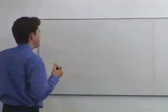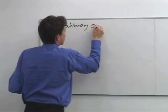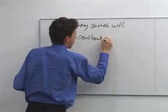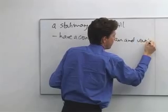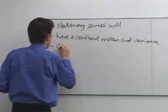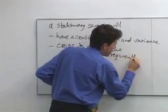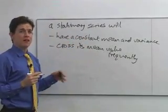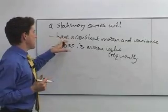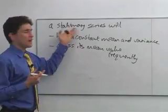We can think of a stationary series as one which has the following characteristics. First, a stationary series will have a constant mean and variance. Secondly, a corollary of that is that a stationary series will cross its mean value frequently. This is not an algebraic definition of stationarity, nor is it very precise, but it will do for now. So if we examine a series and it appears to have a constant mean and variance and it appears to cross its mean value frequently, then very loosely speaking, we can say that series is probably stationary.